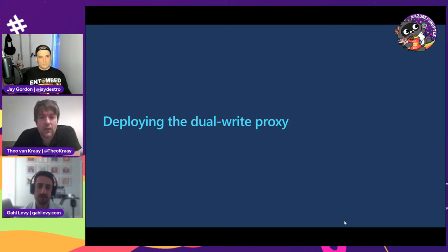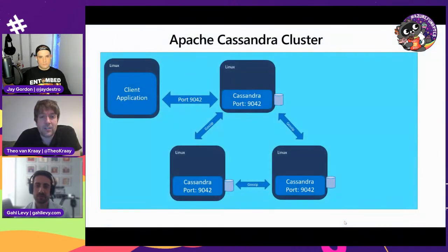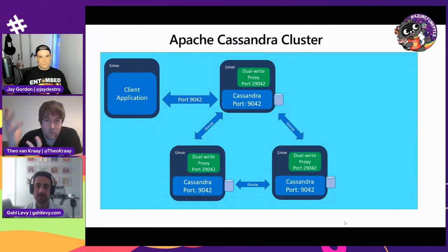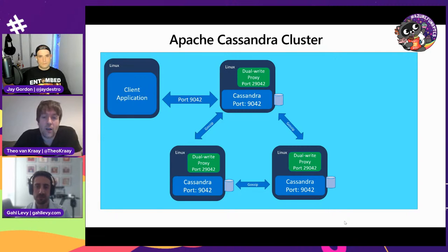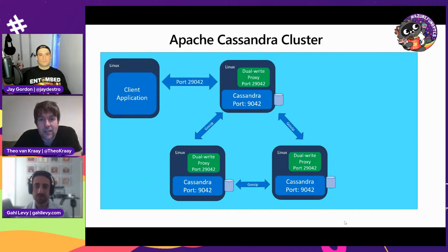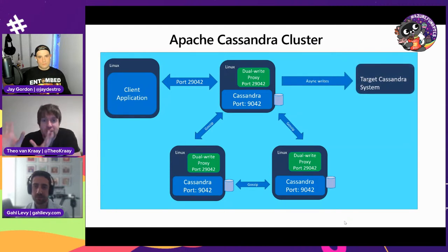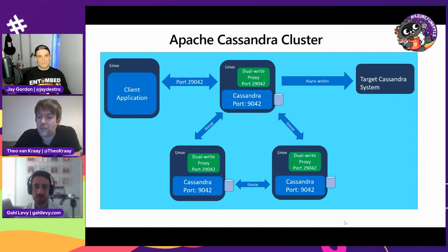The DualWrite Proxy is a tool you can install on an existing Apache Cassandra cluster — it's a piece of Java software you install and run as a process on each node. When it's running, all you have to do in your application is just change the port; no other changes. The proxy then routes requests to both the local node and the target Cassandra system, taking away a lot of the pain, concern, and friction.